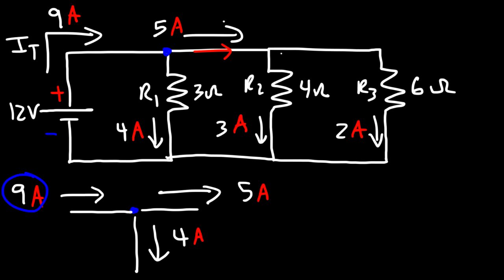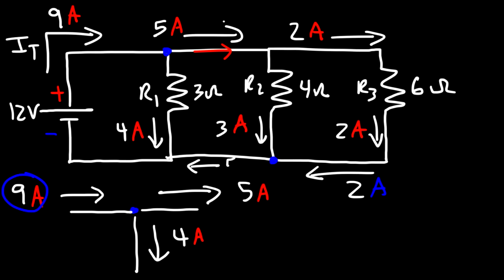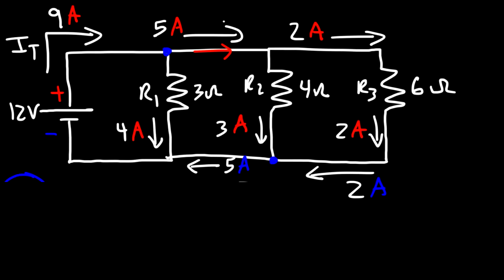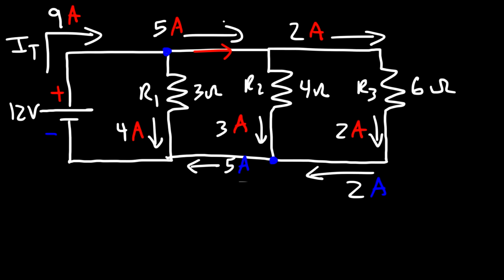So we have 5 amps flowing toward the right. Out of those 5 amps, 3 amps goes one way, so the other 2 amps flows in the other direction — like a river splitting off into three directions. In this section, we still have 2 amps of current traveling here, and when it joins up with the 3-amp current, 3 and 2 add up to 5. So we have 5 amps flowing in this region. Then the 5 and 4 come together, giving us a total of 9 amps of current flowing in this region.